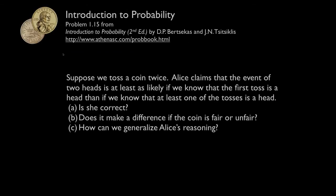Next, suppose we toss a coin twice. Alice claims that the event of two heads is at least as likely if we know the first toss is a head than if we know that at least one of the tosses is a head. We want to answer: is she correct? Does it matter if the coin is fair or unfair? And can we generalize her reasoning?